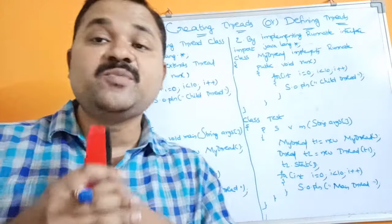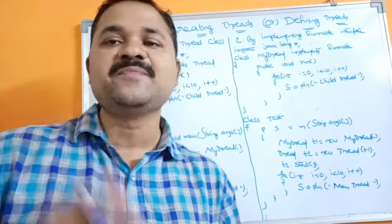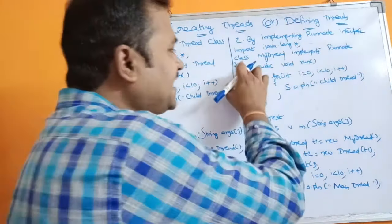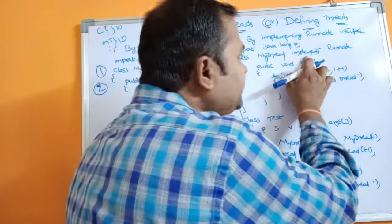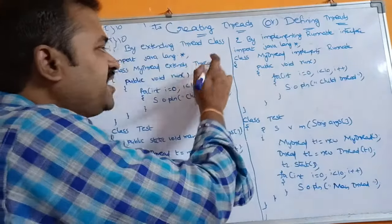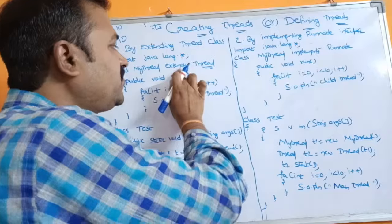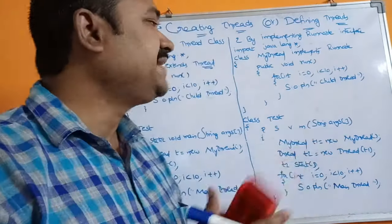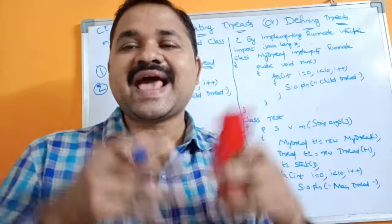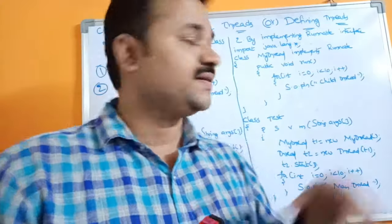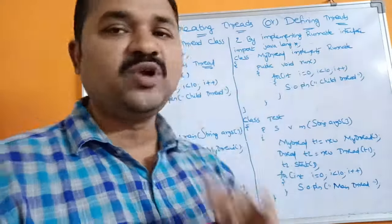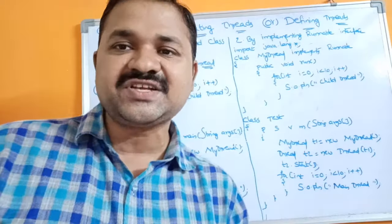Now let's see the second approach — by implementing the Runnable interface. Runnable is an interface present in the java.lang package. So: import java.lang.*; then class MyThread implements Runnable. We use the keyword 'implements' since Runnable is an interface. The Runnable interface contains an abstract method called run(), so any class implementing Runnable must provide the definition for run().